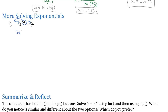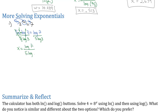So now I have 5x times the log of 3 equals the log of 7. Now we're really just trying to solve for that x, which is multiplied by a 5 and multiplied by a log of 3. To get rid of that multiplication, we can divide by both the 5 and the log 3 on both sides, leaving just x equals log 7 over 5 log 3.